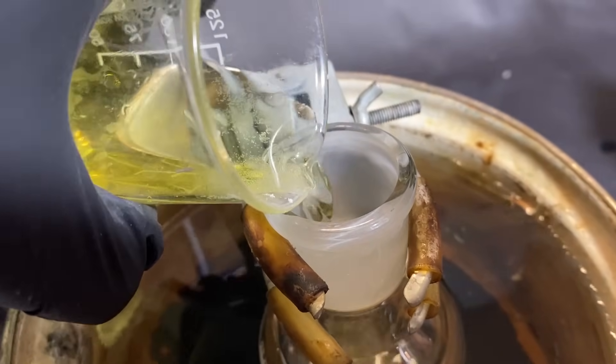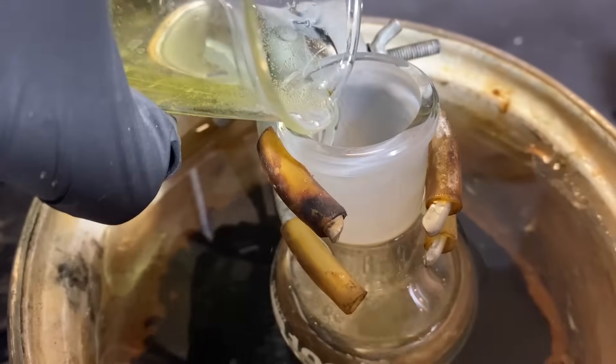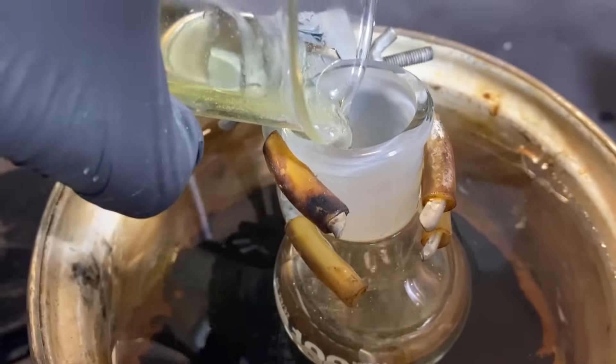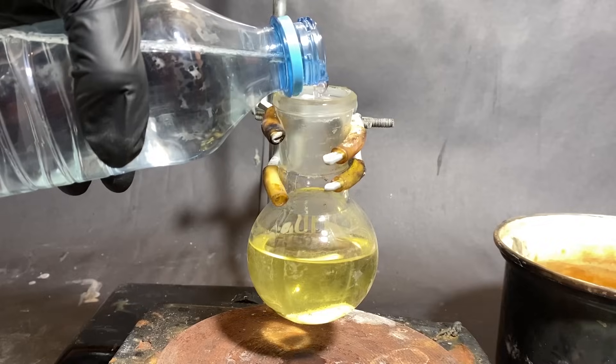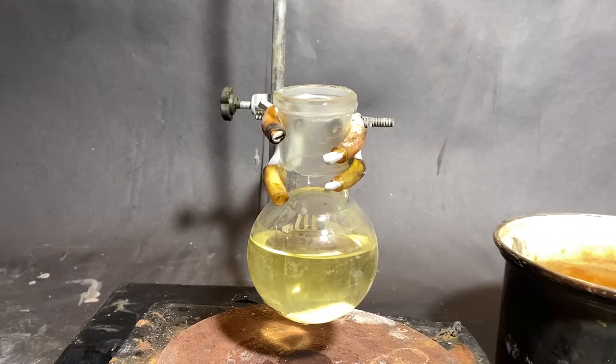Anyway, I added the yellow solution into a round bottom flask, and I set up a hot water bath reflux. After letting it react for like 2 hours, I neutralized the solution with sulfuric acid, and I let it crystallize overnight.